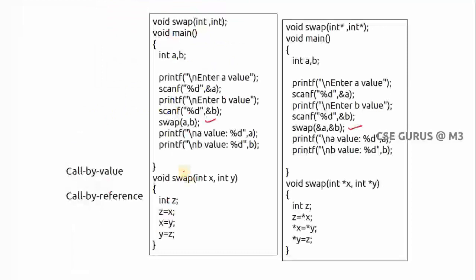So this is the difference between call by value and call by reference — both in terms of execution and program structure. We'll see the concept of dynamic memory allocation in the next video lecture. Thank you.